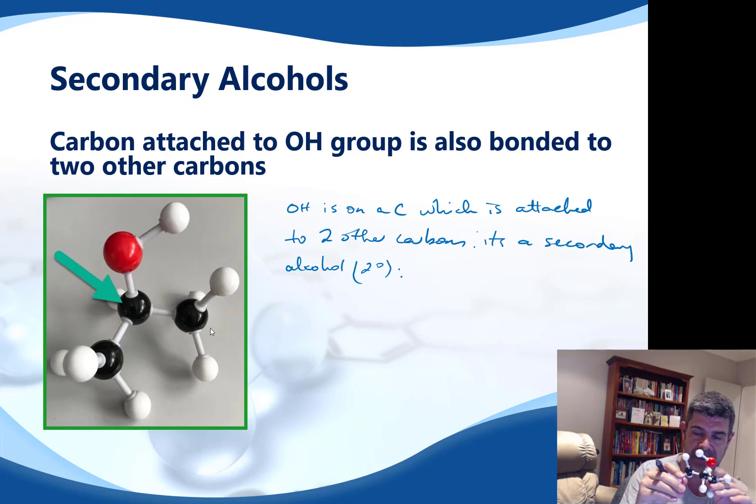So in this case, and therefore when we're naming it, we said in the previous slide that what we had to do was to look at a numbering system because we knew this was a possibility. So now we have it. And of course this time, whichever direction we count from, it's going to be one, two, one, two. It's going to be number two. So again, what we want to do is call this propan-2-ol.